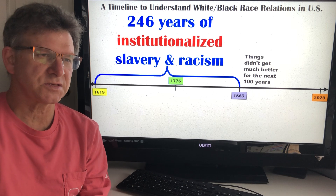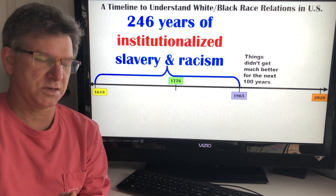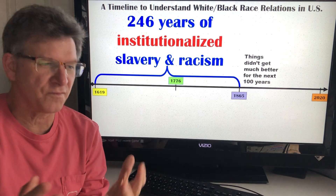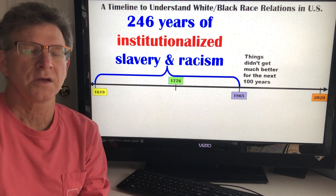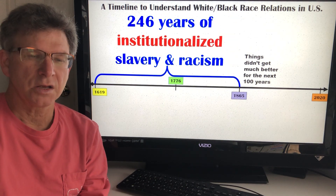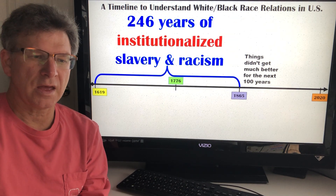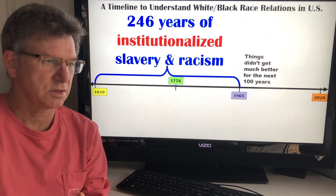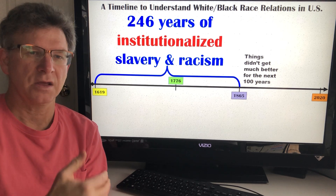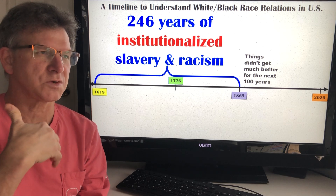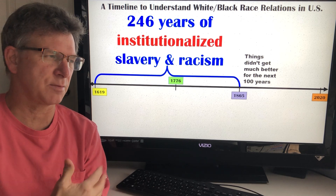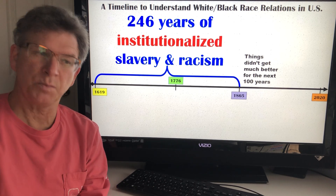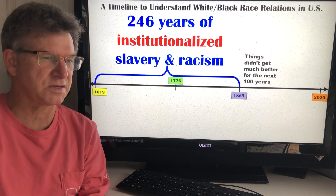It's important to remember that this period from 1619 up to 1865 constitutes 246 years of institutionalized slavery and racism — meaning the institutions of society, government, businesses, and banking all sanctioned, endorsed, and protected slavery. These institutions also promoted the idea that blacks were inferior and whites were superior, which is the very nature of racism.